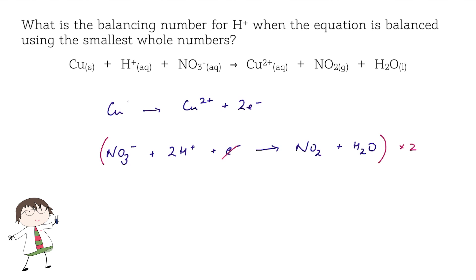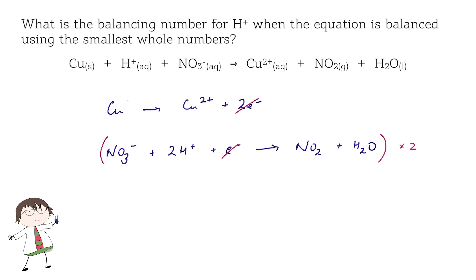Then, the electrons will cancel out on either side of the arrow. So my final equation is going to be copper